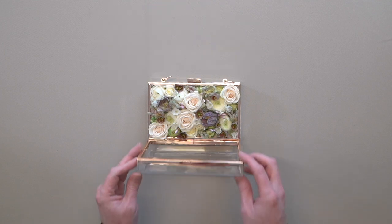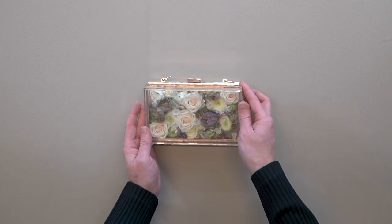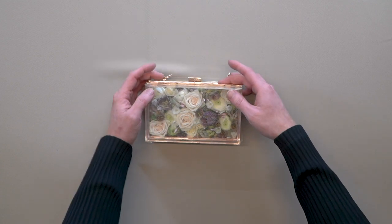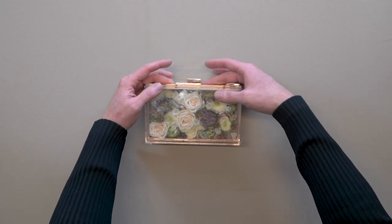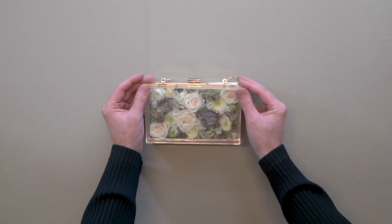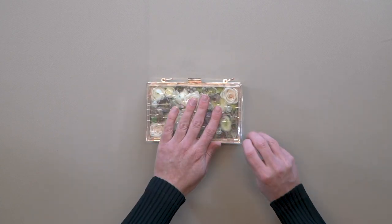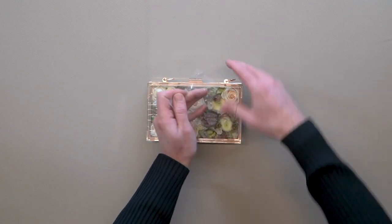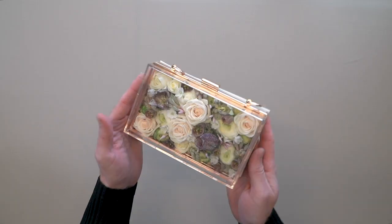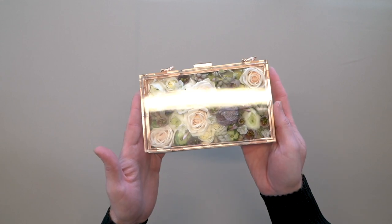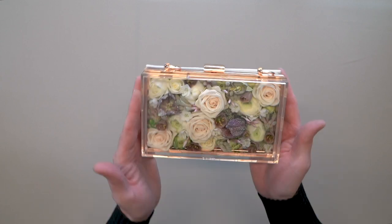When we close up the bag, we can do so really carefully and gently just by making sure all our florals are neatly tucked within the bag safely. And then as a final trick, we'll take off the protective layer over the top of the acrylic bag. And then we've got our floral clutch bag completely finished and pretty much ready to go.